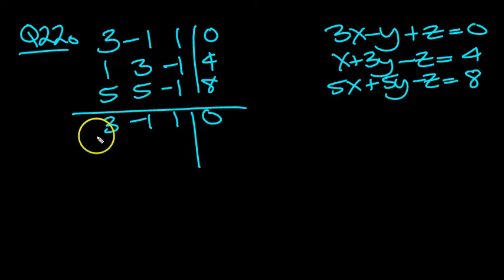So we've got three lots of row 2 minus row 1. Okay then, three of these take one of those: 3 take 3 is 0, three of these is 9 take 1 times 1, minus 1 is plus 1, 9 plus 1 is 10. Three of these take one of those, so minus 3 minus 1 is minus 4. Three of these is 12, take nothing is 12.